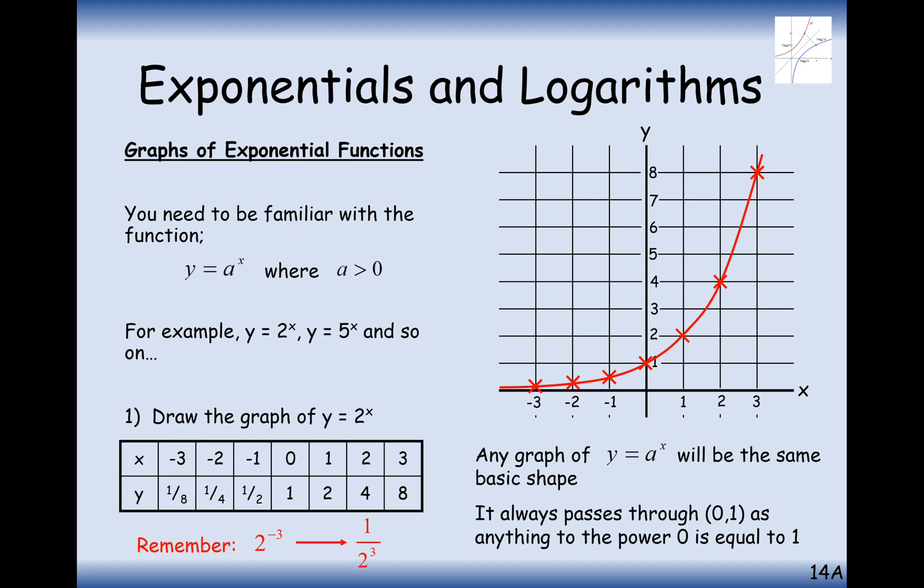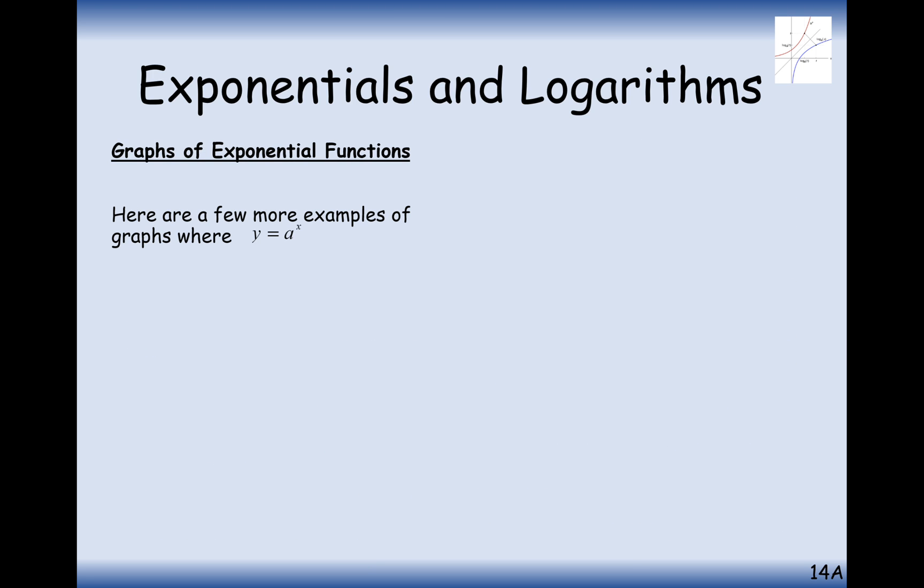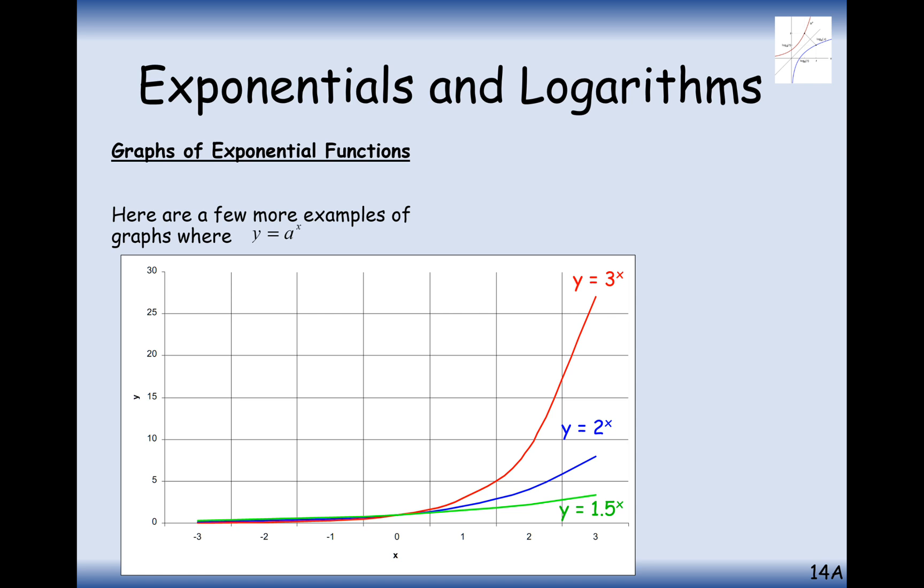So most of these graphs will have the same basic shape and it will always cross through at 0, 1. Here are a few more examples. As the number tends towards 1, it's going to flatten out. And as the number gets bigger, it's going to increase more rapidly and more quickly. They'll all pass through 0, 1. They'll never go below 0. They'll never be negative.